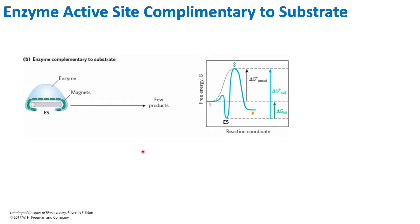When we have an enzyme, there are two different possibilities. We know that the substrate is going to bind to the active site of an enzyme. That active site can either be complementary to the substrate, or it can be complementary to the transition state, and we'll take a look at that in a second.